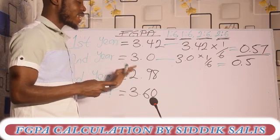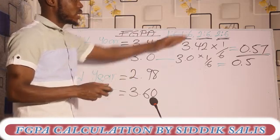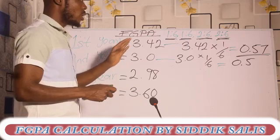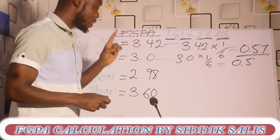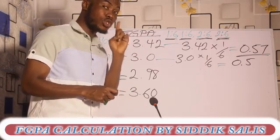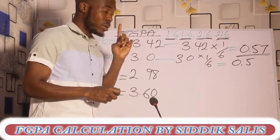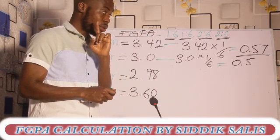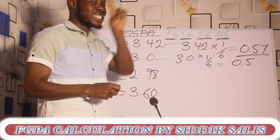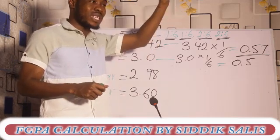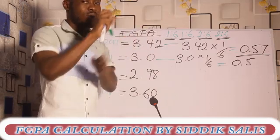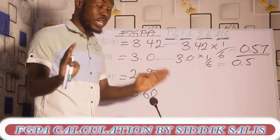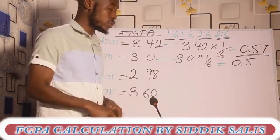For the third year and the fourth year, the GPA is multiplied by two instead of one. If you look at your CGPA, it continues without bringing in this multiplier, so you need to do this calculation yourself.